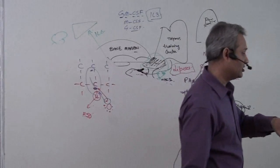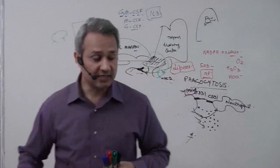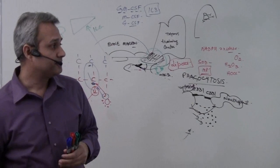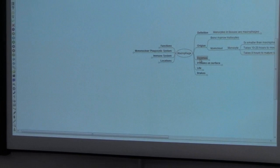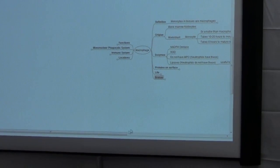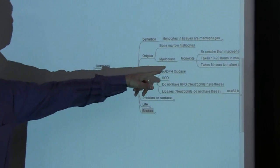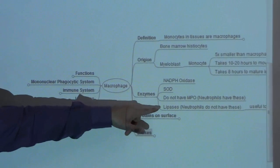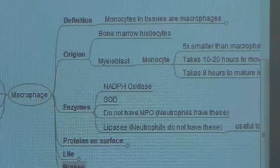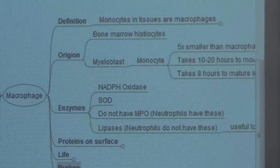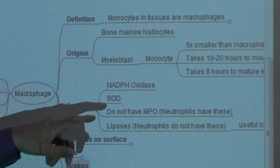That's the reactive oxygen species. Let us quickly see what we are left with. One important thing was to see the enzymes. We have NADPH oxidase, superoxide dismutase. The macrophages do not have myeloperoxidases. Neutrophils have them, macrophages do not. That's why macrophages cannot produce HOCl-like substances.